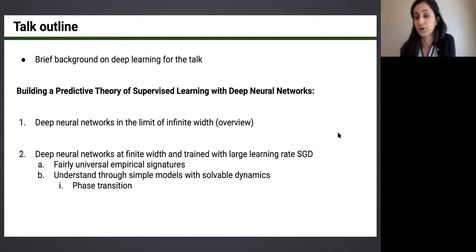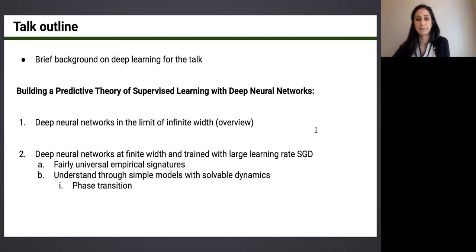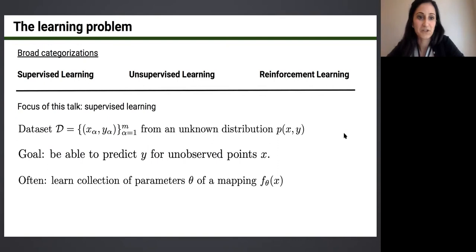In this new regime, which we call the large learning rate phase of gradient descent in deep learning, systems that operate in this regime have fairly universal empirical signatures. We'll try to understand these systems through simple models with solvable dynamics, revealing a phase transition between two classes of systems — which was not previously known and I'm pretty excited about.